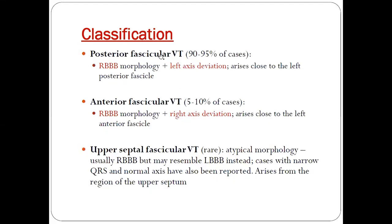There are three types of fascicular VT. The first is posterior fascicular VT, which accounts for 90 to 95 percent of cases, showing RBBB morphology plus left axis deviation, arising close to the left posterior fascicle. The second is anterior fascicular VT, with RBBB morphology plus right axis deviation. The third form is upper septal fascicular VT, which can have a typical narrow complex morphology.